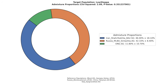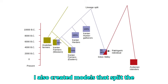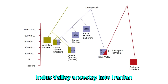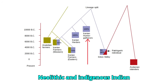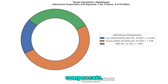The lowest steppe individual was found to have 42% steppe, 46% Indus Valley, and 12% Ancient Ancestral South Indian ancestry. I also created models that split the Indus Valley ancestry into Iranian Neolithic and Indigenous Indian components.